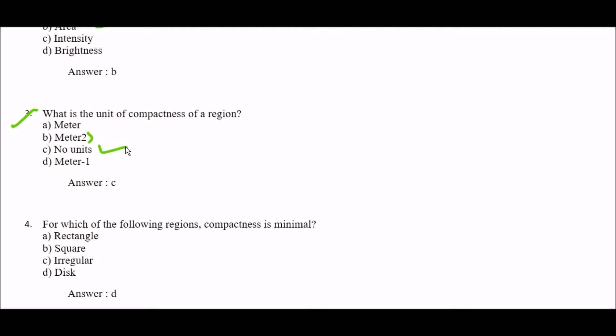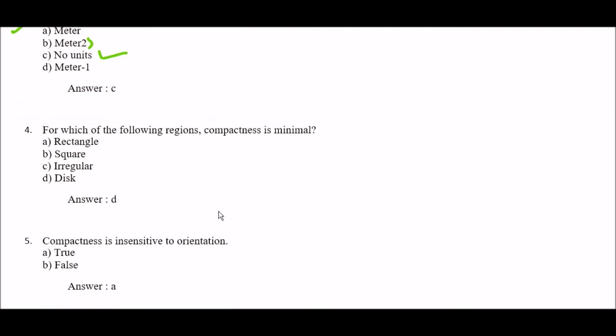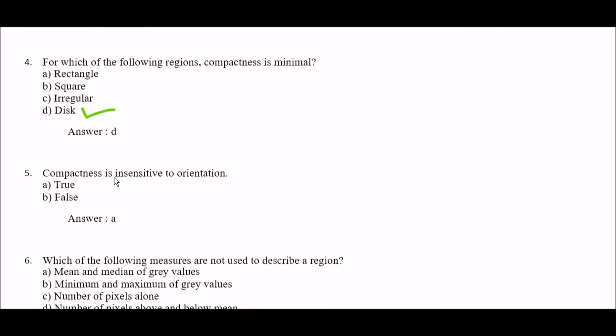Next question: for which of the following regions is compactness minimal? Option A: rectangle, option B: square, option C: irregular, option D: disc. The right answer is option D — disc. So in disc regions, compactness is minimal.